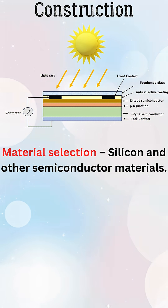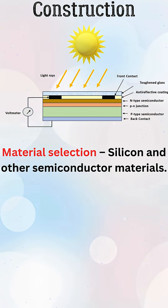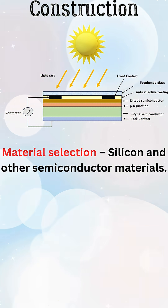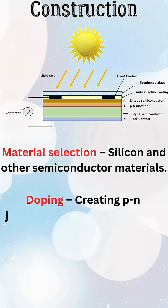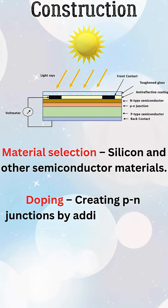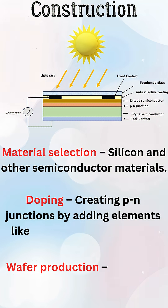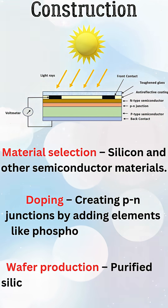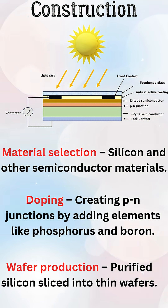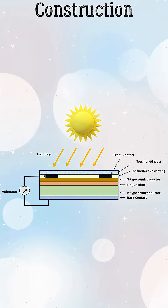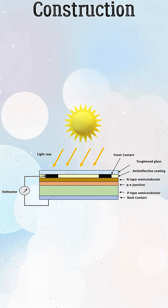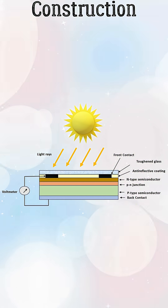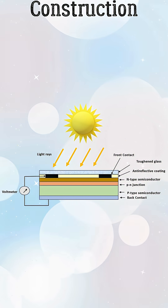How solar cells are constructed: it consists of a P-N junction, formed by layering P-type semiconductor and N-type semiconductor, usually silicon doped with boron and phosphorus respectively. An anti-reflective coating on the thin N-type layer maximizes sunlight absorption. Metallic contacts on both sides of the cell collect the electrons and holes, creating a direct current when photons strike the cell and release electrons.